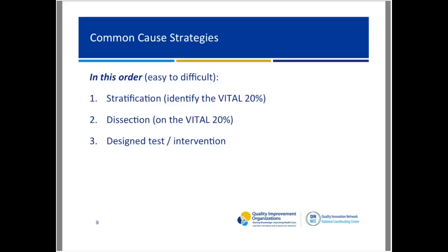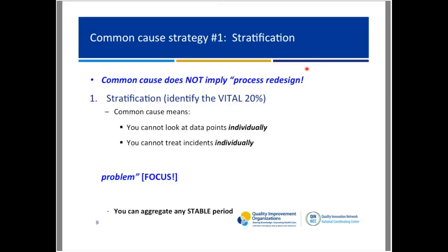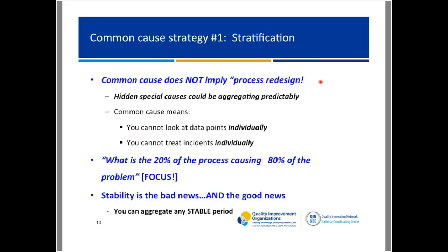Each of these strategies gets progressively more difficult in terms of how much it disturbs your work culture. A lot of us have made the mistake of immediately going in and collecting everything you can about a situation, hoping for some insight — or we tend to jump right to 'we all know what the answer is, we have to implement this.' Remember: things are the way they are because they got that way. Common cause strategy number one is stratification.